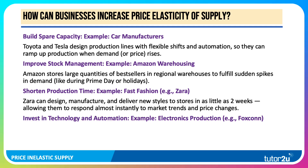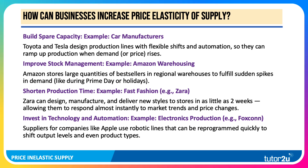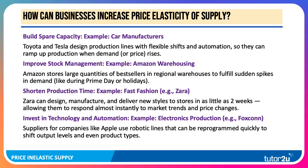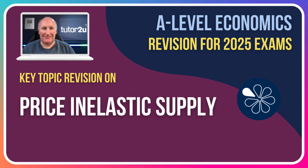Investment in technology or automation is another approach. Suppliers such as Foxconn for companies like Apple use robotic lines that can be reprogrammed quickly to shift output levels and even product types. So those are four ways that businesses might try to make supply more price elastic so that their production can be more responsive to changing market conditions. Thanks for joining in this video.